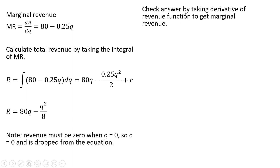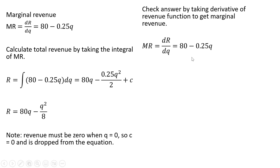We can check our answer by taking the derivative of this revenue equation. Taking the derivative of 80q, we get 80. The derivative of minus q squared divided by 8 is just going to be minus 0.25q.